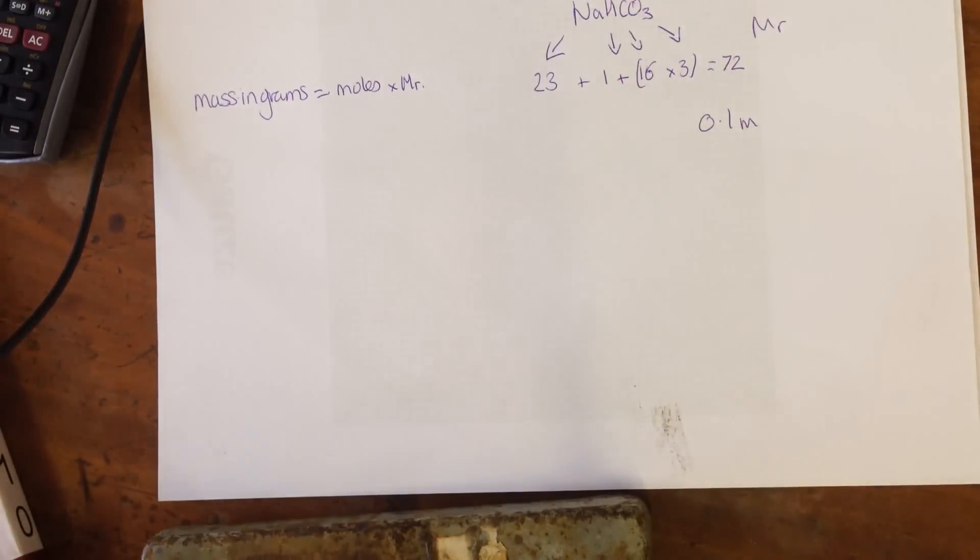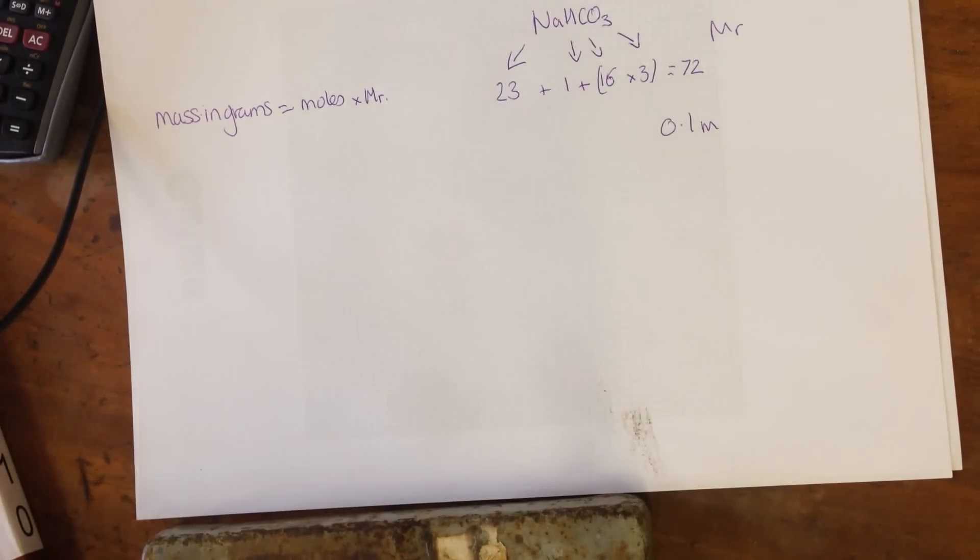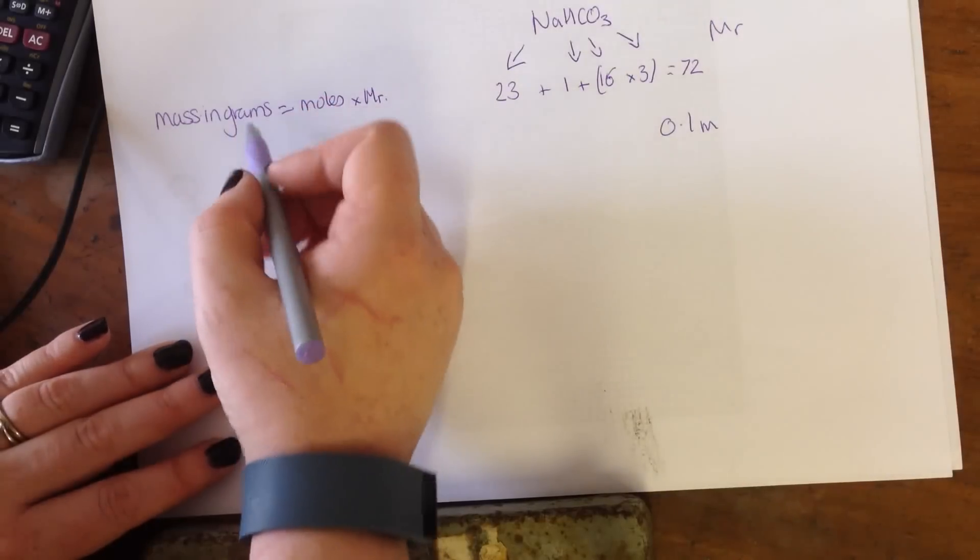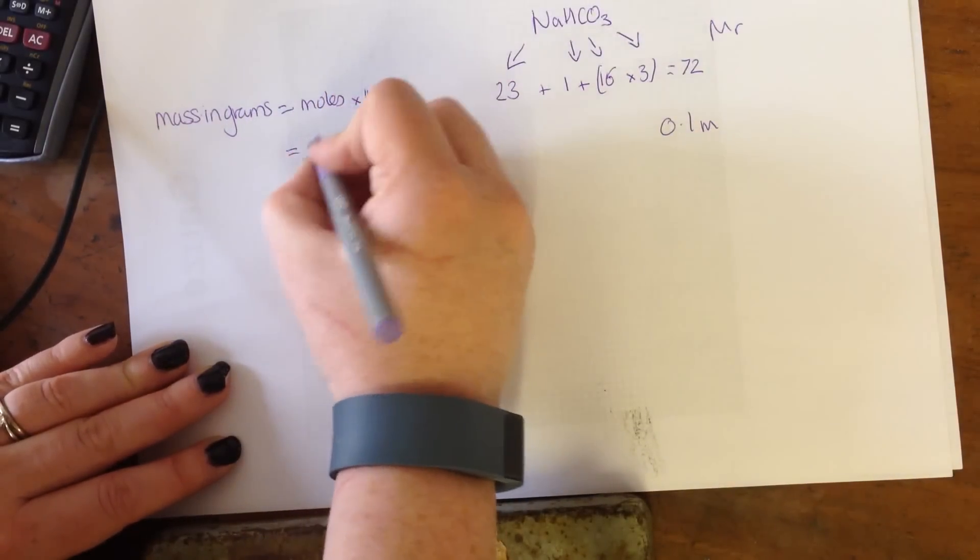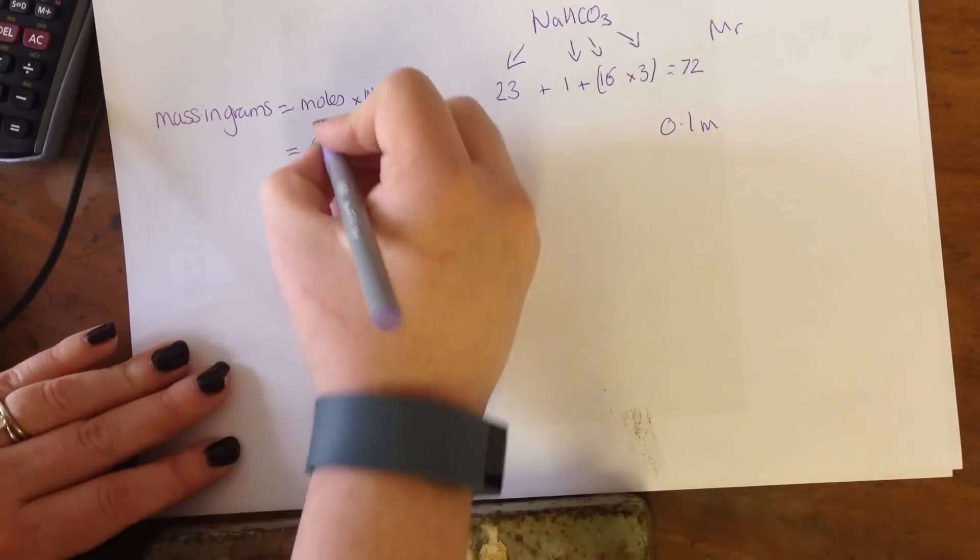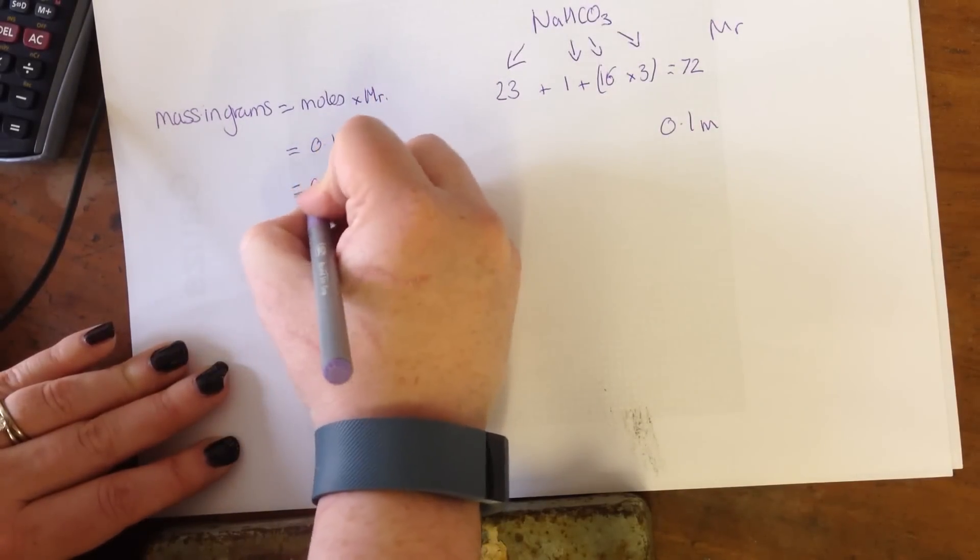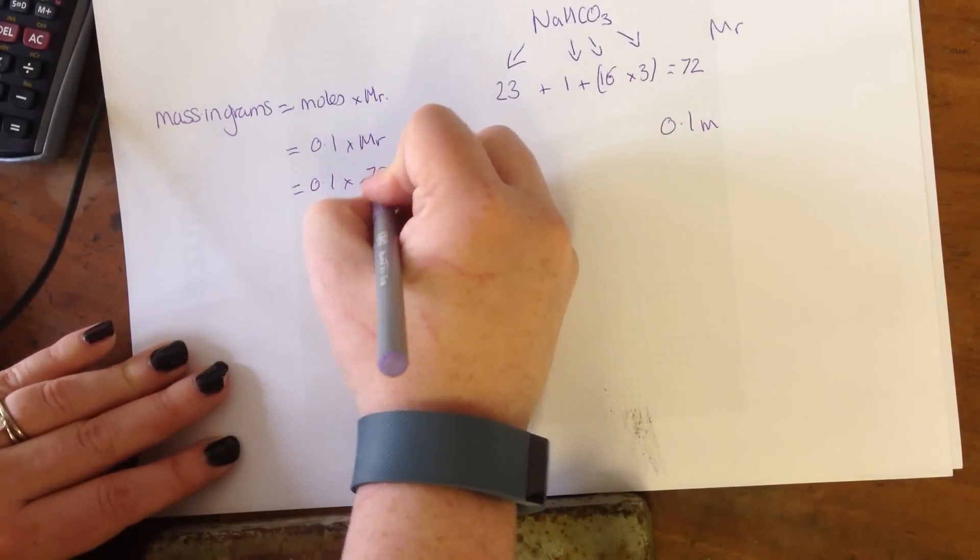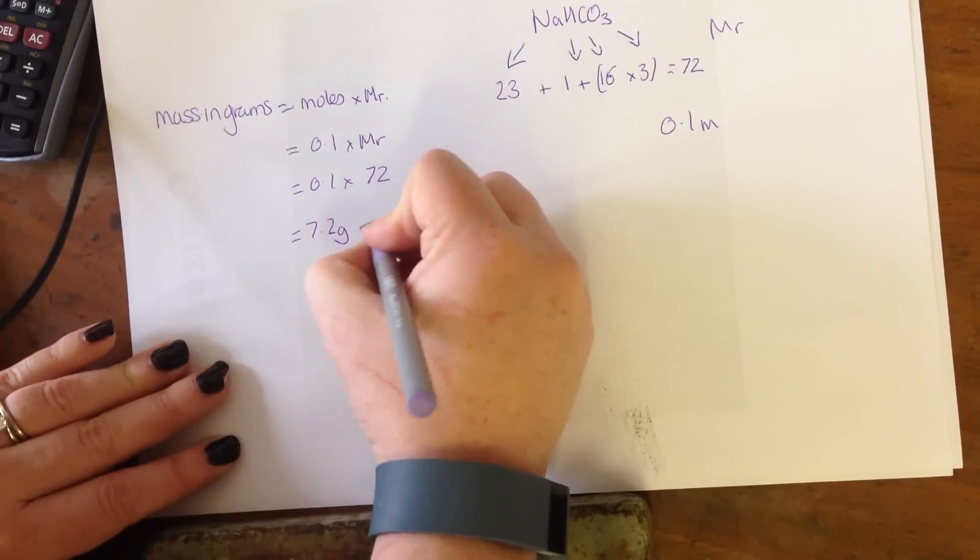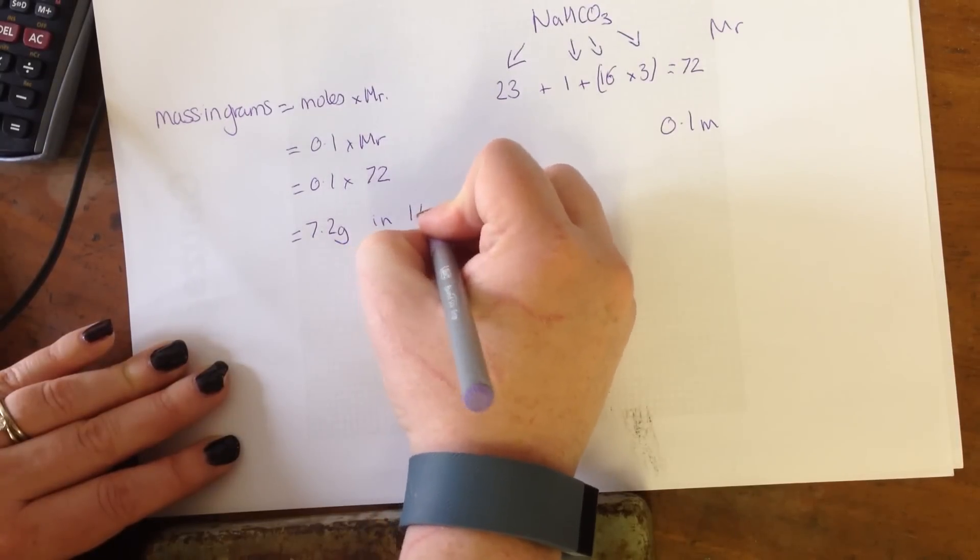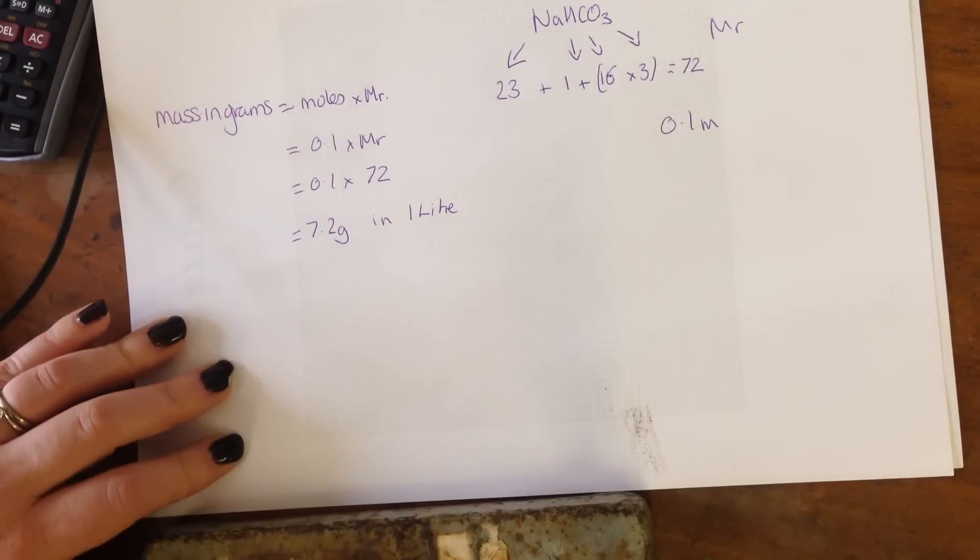Now there are a couple of ways that you can work out this. The way that the book tells us: mass in grams equals moles times MR. So if I want a 0.1 molar solution, I times that by the MR. So 0.1 times 72 equals 7.2 grams.